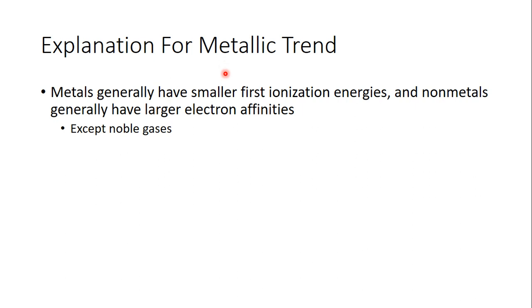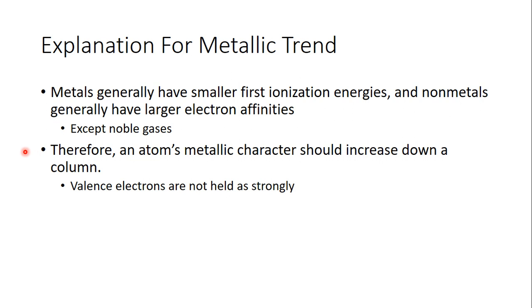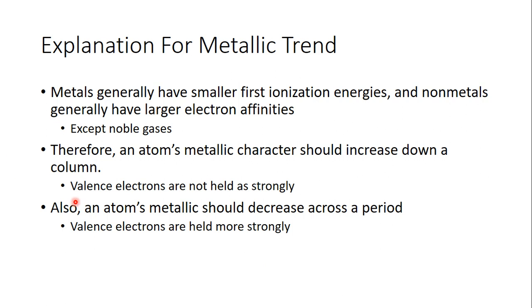And why do we have these metal trends? Well, metals have small ionization energies, while non-metals have large electron affinities, right? So for an atom's metallic character, you should increase as you go down a column, because ionization energy decreases, and that's what we said. And it should decrease as you go from left to right, because ionization energy increases. Valence electrons are held more strongly. And that's it for metals and the trends of the periodic table.